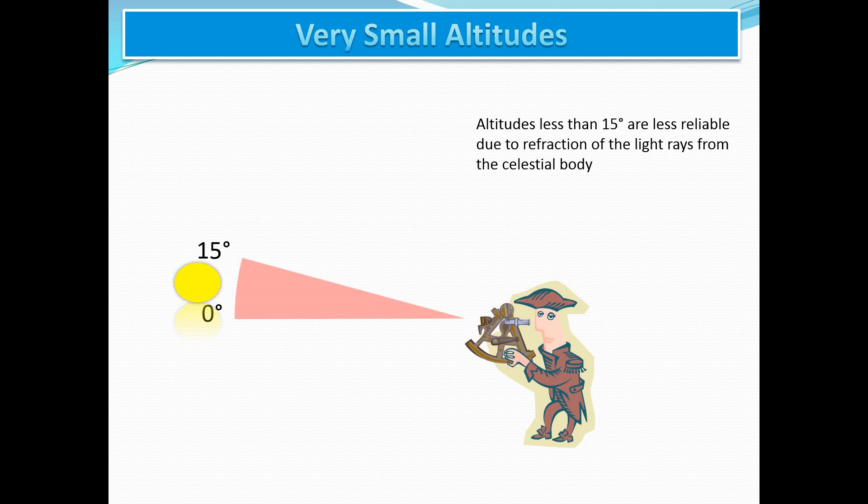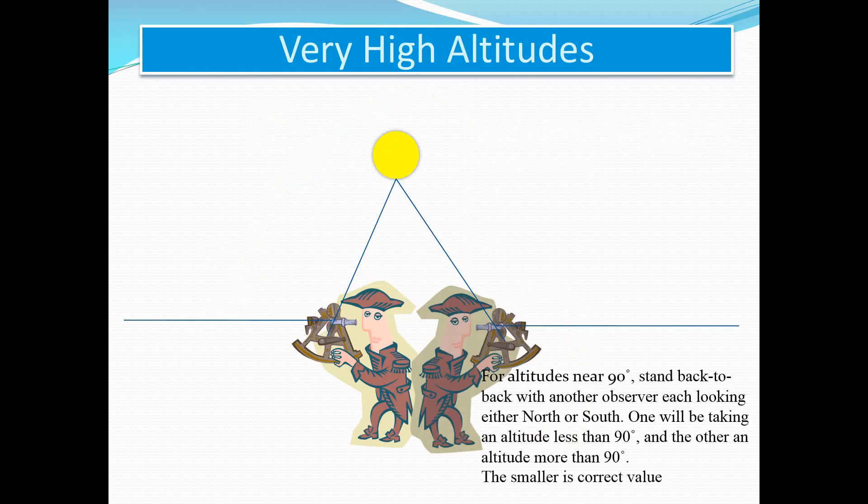The fourth limitation refers to either very small altitudes or very high altitudes. At altitudes of less than 10 to 15 degrees, there will be larger refractions suffered by the light rays traveling from the celestial body to the earth, and the observed angles may be less reliable than otherwise. Such observations should, as far as possible, be avoided. In cases of very high altitudes near 90 degrees, stand back-to-back with another observer, each looking either north or south. One will be taking an altitude less than 90 degrees, and the other an altitude more than 90 degrees. The smaller will be the correct value.